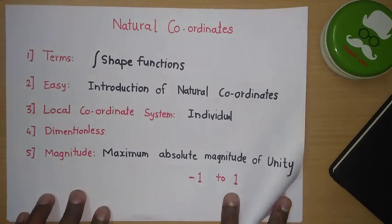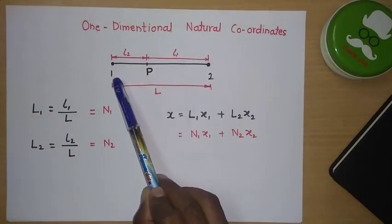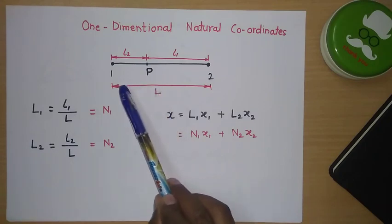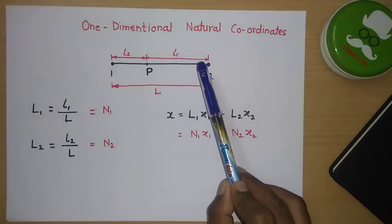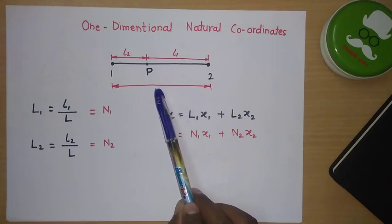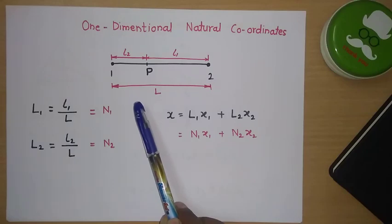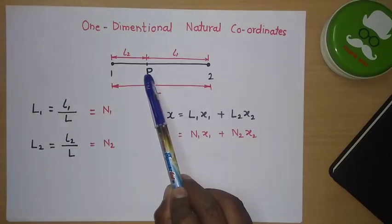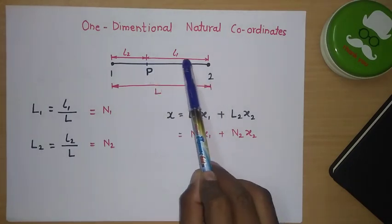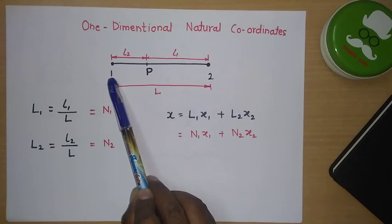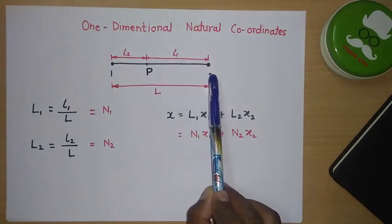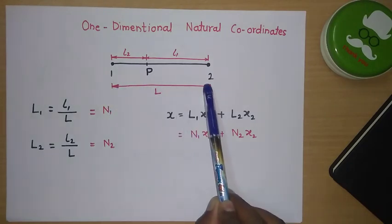Let's look at one dimensional natural coordinates. Consider a one dimensional element having node 1 and node 2, with a point P in between. We are introducing the natural coordinate system for this one dimensional element. From point P to node 2, this length is called L1 — the length opposite to node 1. Similarly, the length opposite to node 2 is called L2, and the total length of the element is L.